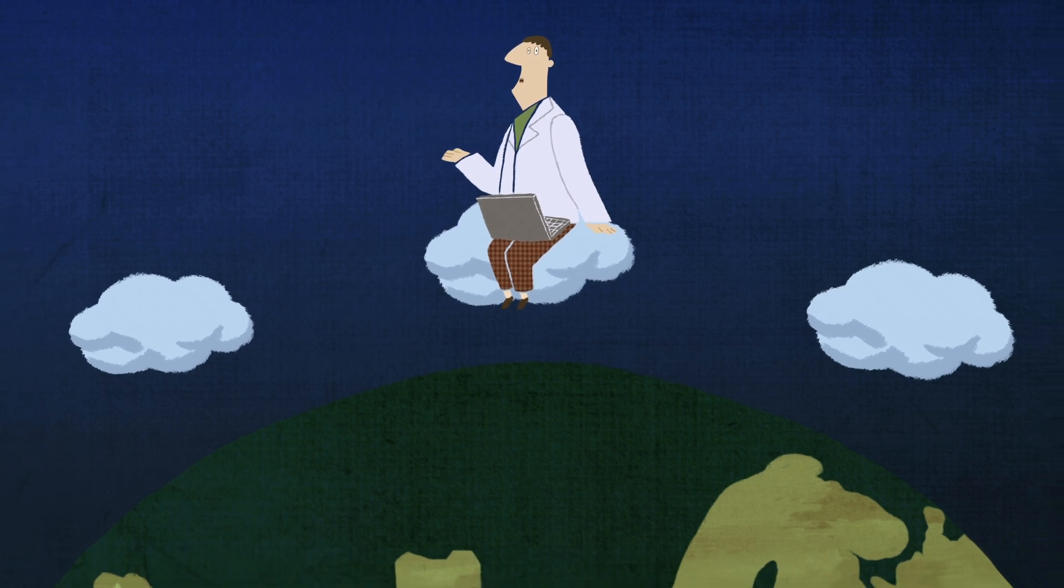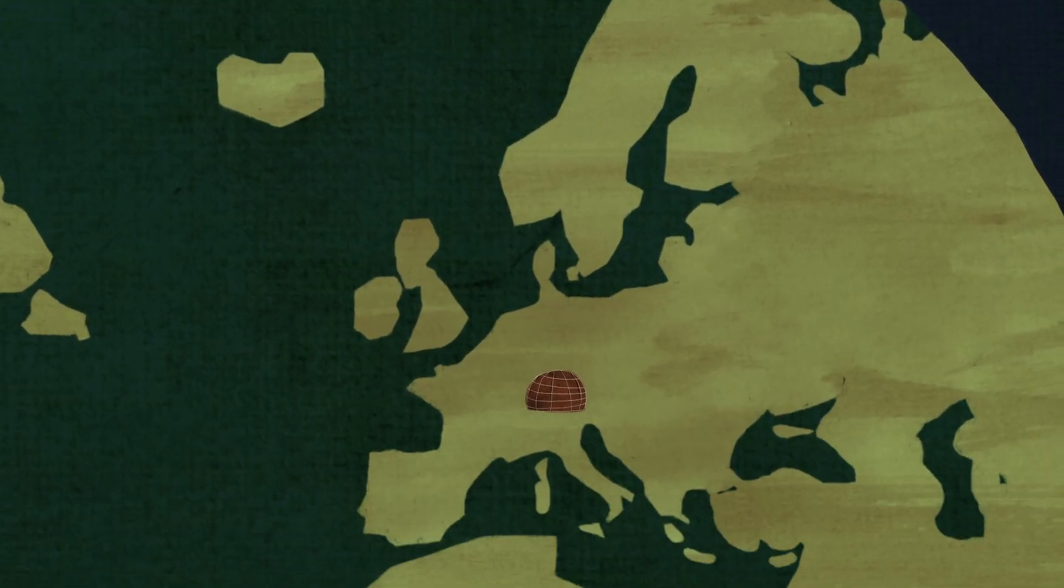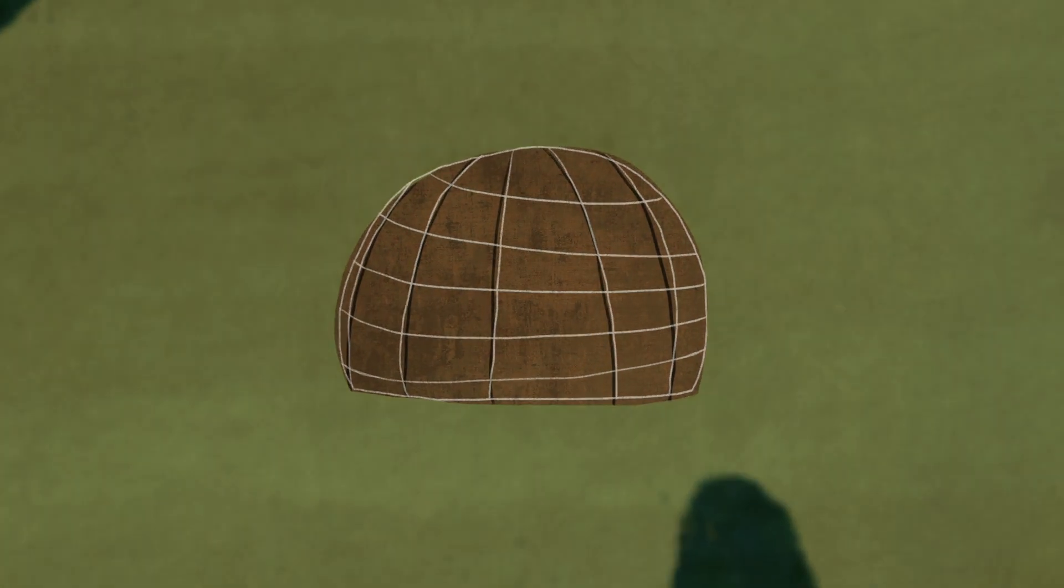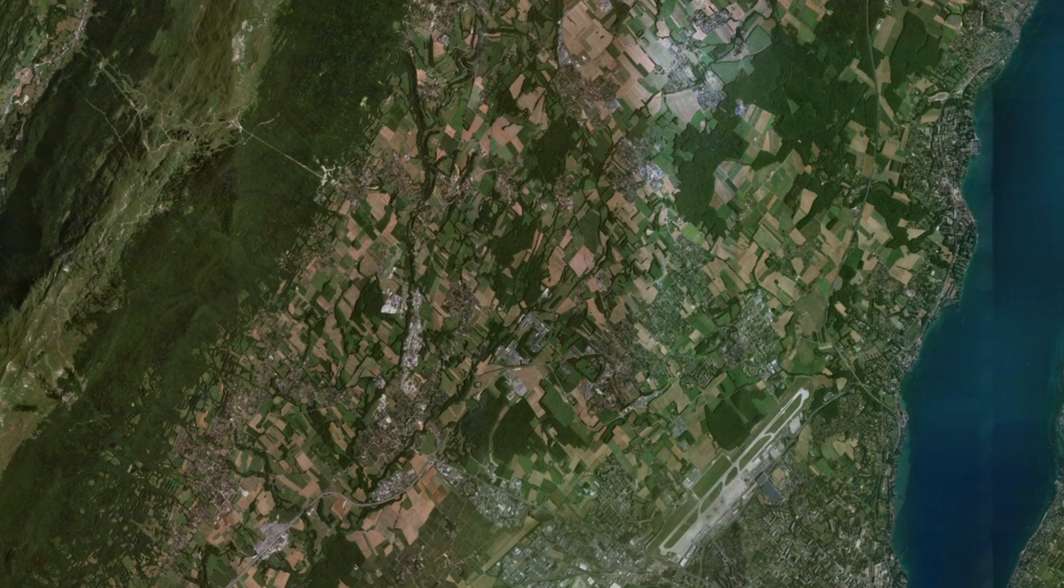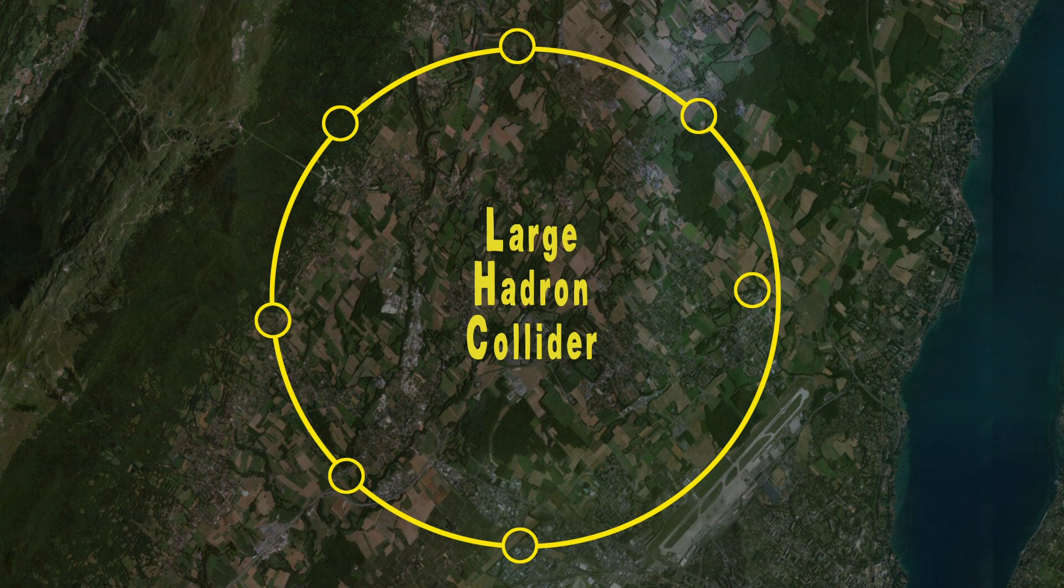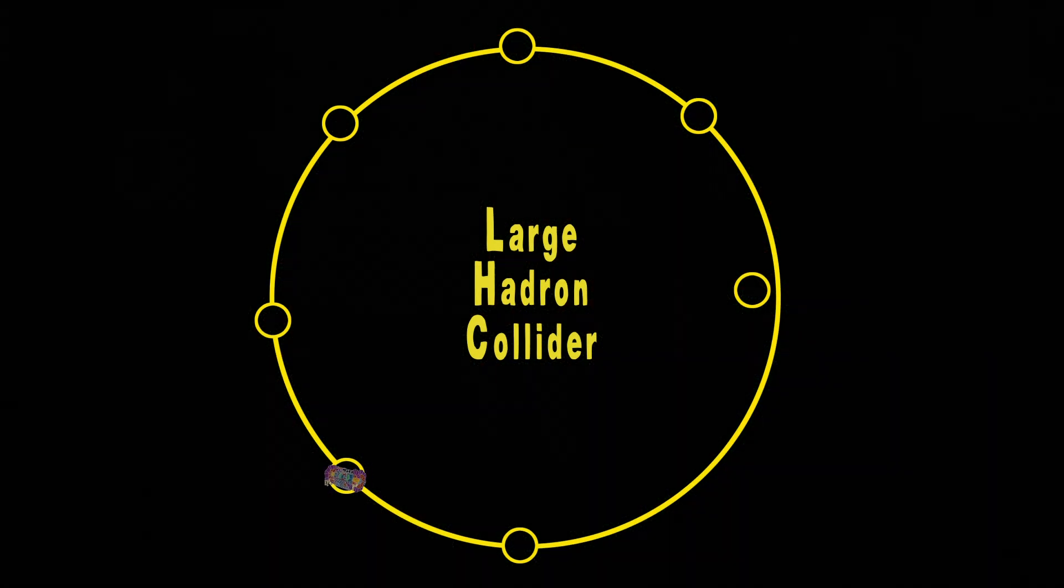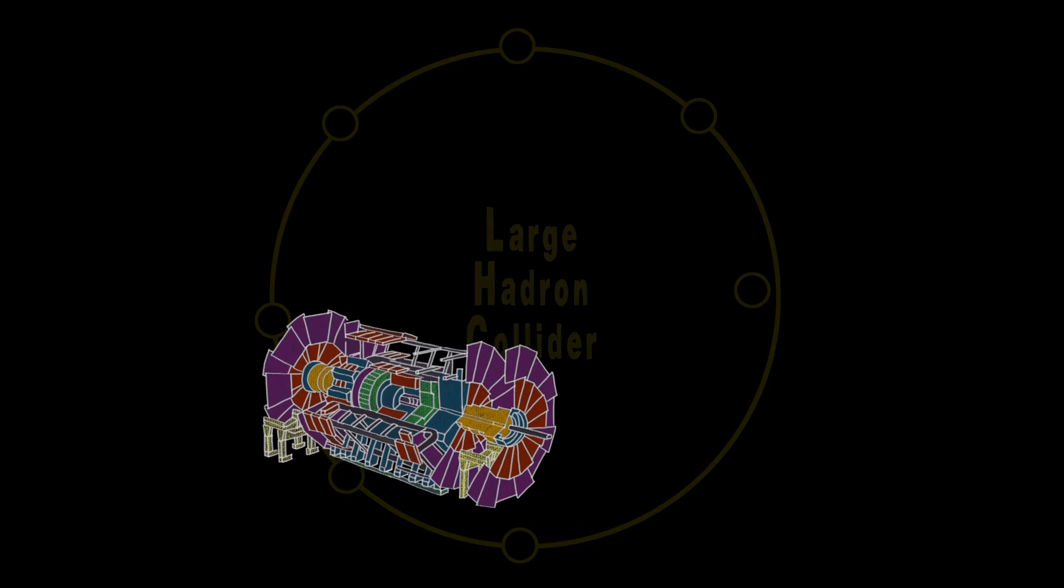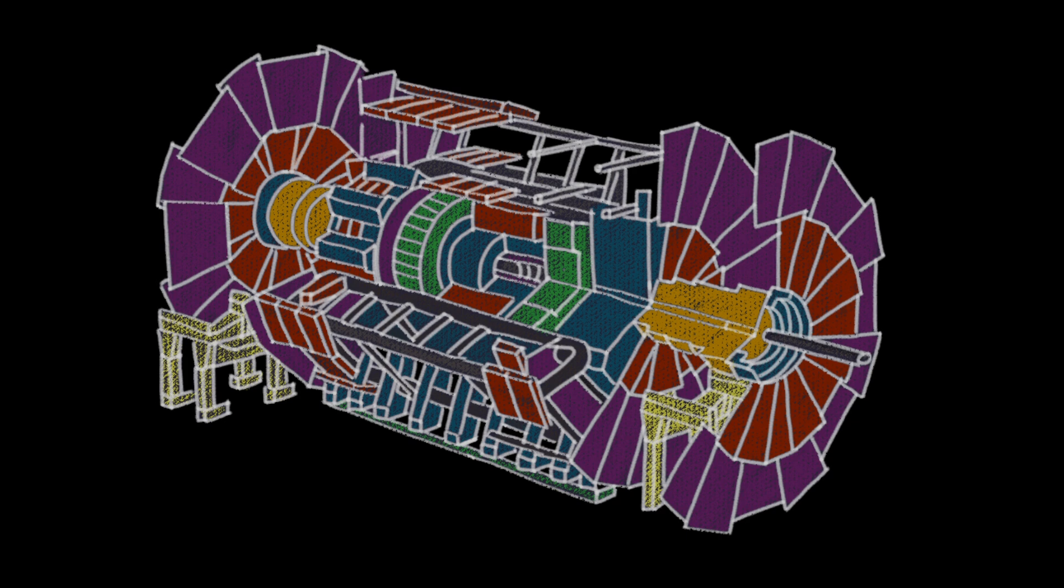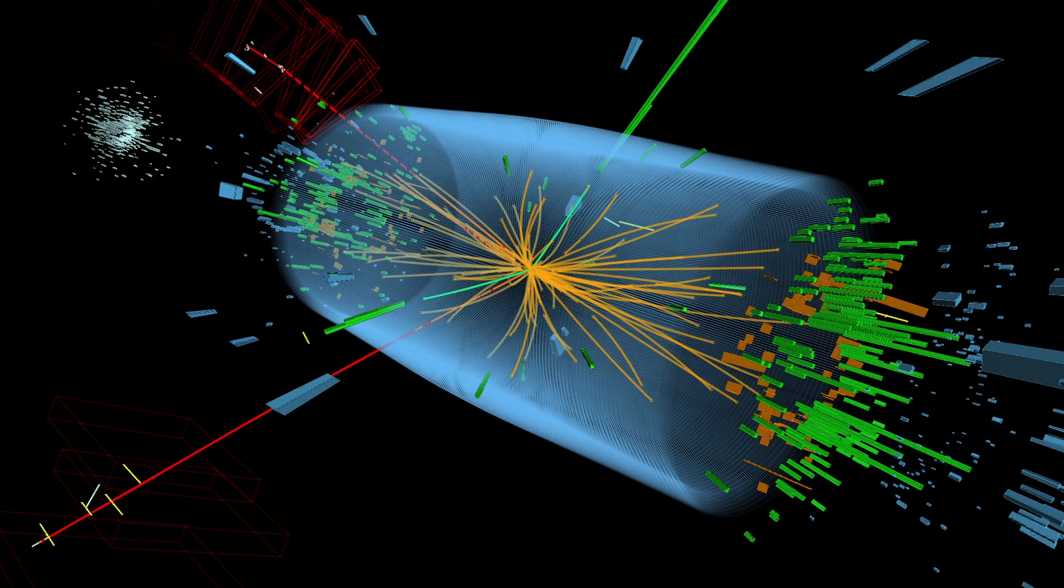It might seem paradoxical for a place like CERN, a lab focused on the study of the unimaginably small building blocks of matter, to be the source of something as big as Big Data. But the way we study the fundamental particles, as well as the forces by which they interact, involves creating them fleetingly colliding protons in our accelerators, and capturing a trace of them as they zoom off near light speed.